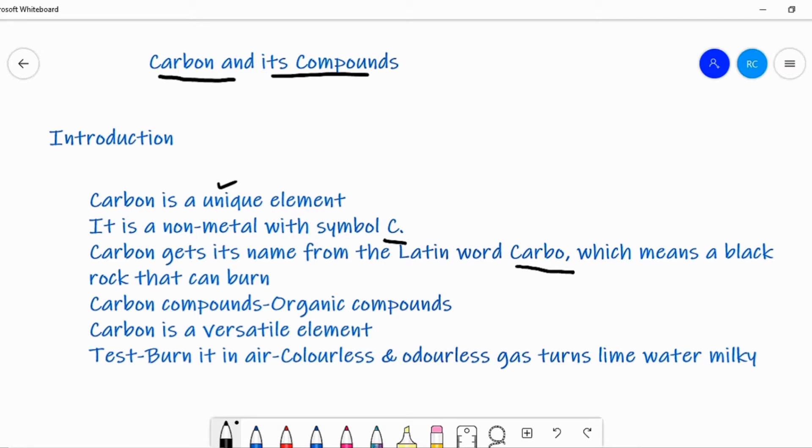The importance of carbon compounds is evident from the fact that all living systems like human beings, animals, birds, plants, and insects of this universe are made up of carbon compounds like carbohydrates, proteins, vitamins, fats, hormones, nucleic acids, etc.